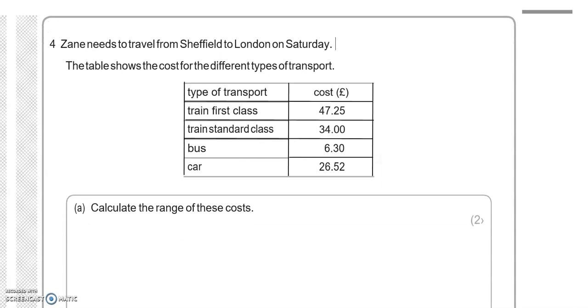Zane needs to travel from Sheffield to London on Saturday. The table shows the cost for the different types of transport. Calculate the range of these costs.